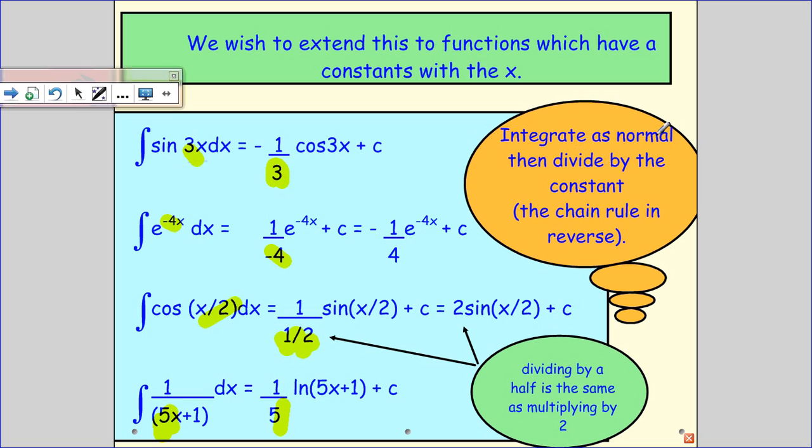Now, the rule is when you integrate this, you integrate as normal and you divide by the constant. And the reason you're dividing by the constant is that you would actually have multiplied by the constant using the chain rule when you differentiated that function in the first place.